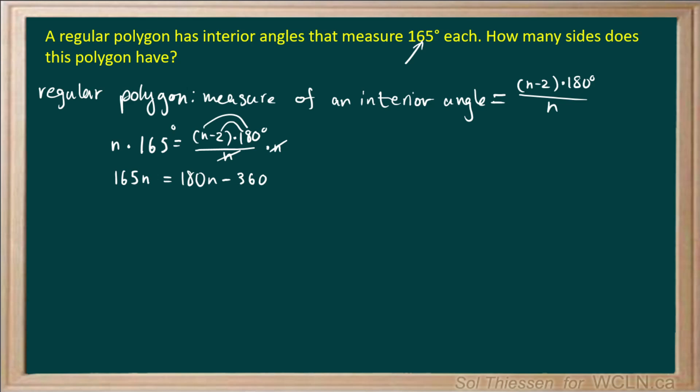So now we want to get the terms with N's on one side of the equal sign. So how about we subtract 180 N from both sides? That will leave us with negative 15 N equals negative 360.